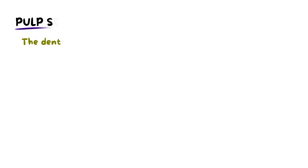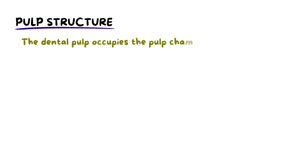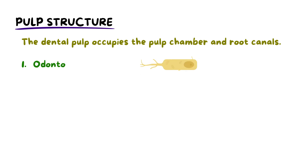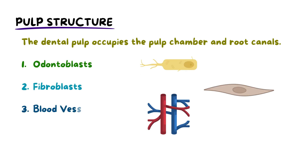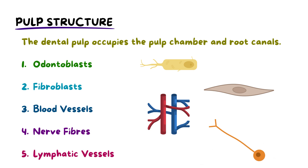The dental pulp is a complex tissue located within the tooth, occupying the pulp chamber and root canals. It consists of various cell types, including odontoblasts, fibroblasts, blood vessels and nerve fibers. In some cases, lymphatic vessels have also been shown to be present.